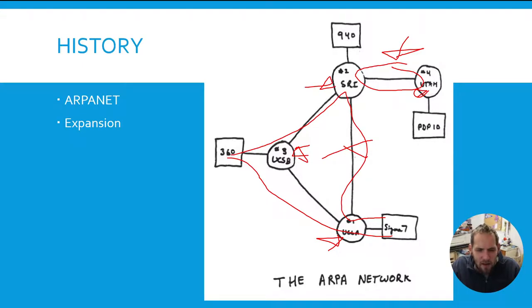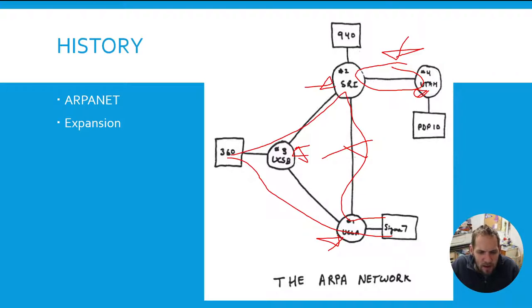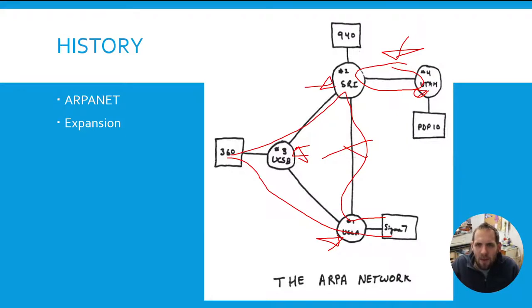In 1995, the internet was privatized — it went from being a DARPA project to being privately owned, or at least different portions of it were privately owned. A new backbone was formed with network access points in Chicago, Indiana, New Jersey, San Francisco, San Jose, and Washington D.C. Today, the internet exchange points from the backbone are found throughout the whole world. It kind of took off like hotcakes — easy communication from one point to another.